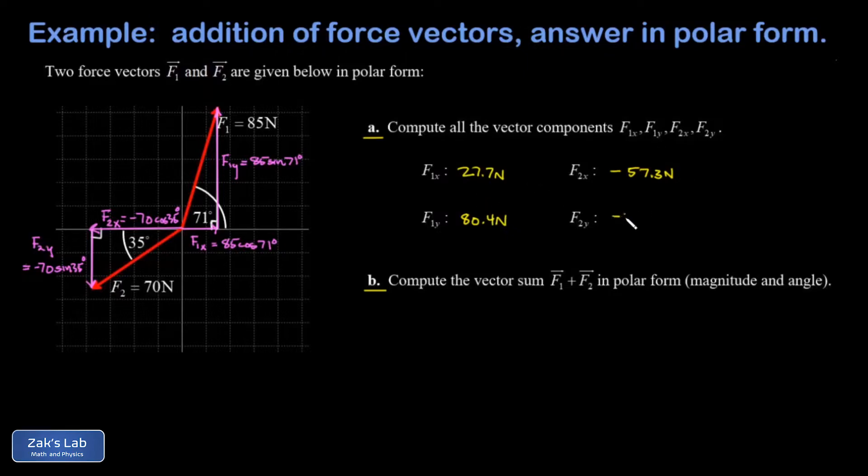Now we simply add up all the x direction components. I have 27.7 pointing to the right, I have 57.3 pointing to the left. That leftward component wins here, that's bigger than the rightward component, so my net x component will take a minus sign. And I'll write down F_net_x is 27.7 minus 57.3 and this gives me negative 29.6 newtons. And F_net_y, that's 80.4 newtons minus a 40.2 newton downward component, this gives me a positive 40.2 newtons.